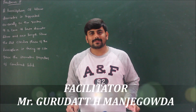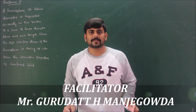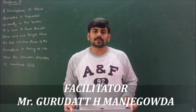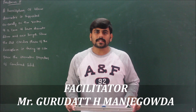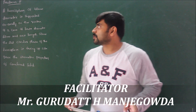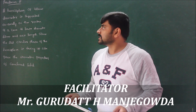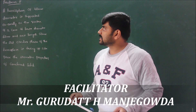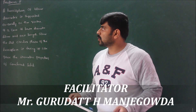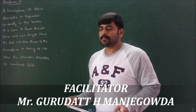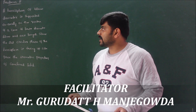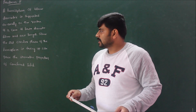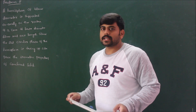Welcome, learners. In module 5 we are discussing isometric projection. Problem number 8 states: a hemisphere of 40 mm diameter is supported coaxially on the vertex of a cone of base diameter 60 mm and axis length 50 mm. The flat circular face of the hemisphere is facing upside. Draw the isometric projection of the combined solid.